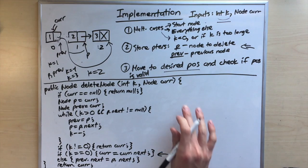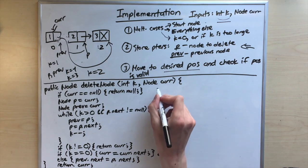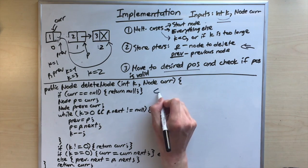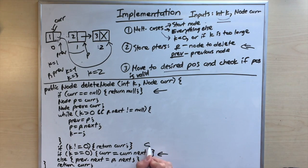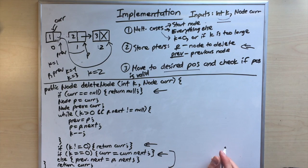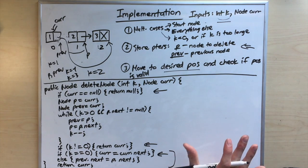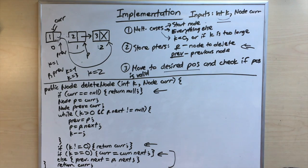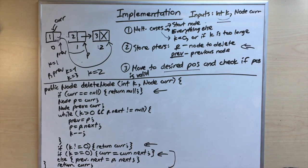To recap: we checked if the list was null, whether the index k was valid, and whether we were deleting the start node or another node. Now let's test this on a few cases.